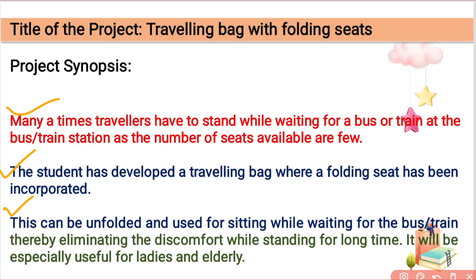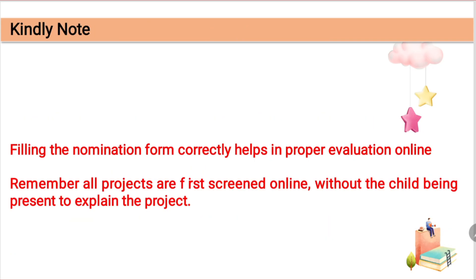So the main problem was fewer seats at bus or railway stations. With this bag, whenever you are waiting for a bus, you can simply unfold the seat in your bag and sit there, solving the problem — especially for ladies and elderly people. As you can see, this title and project synopsis clearly give the judge an idea of what you want to make and what problem you are going to solve.